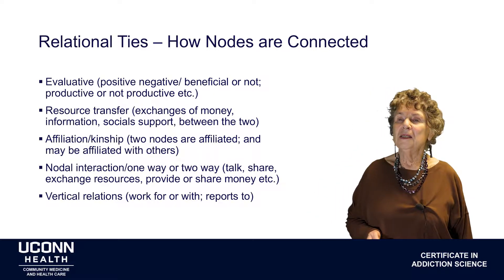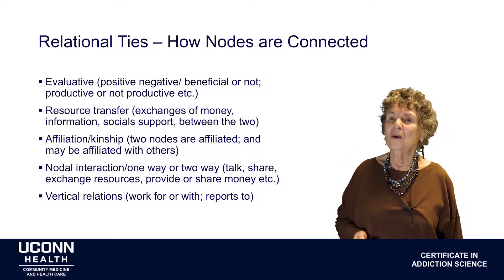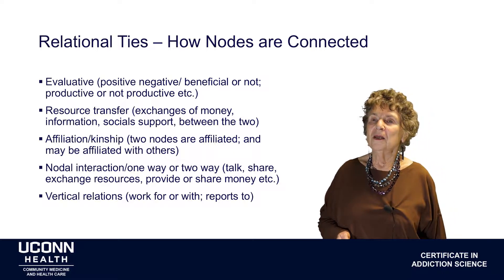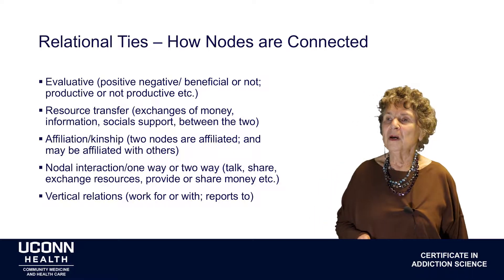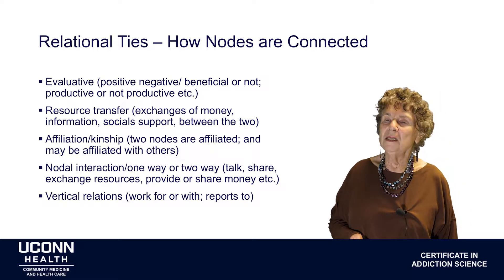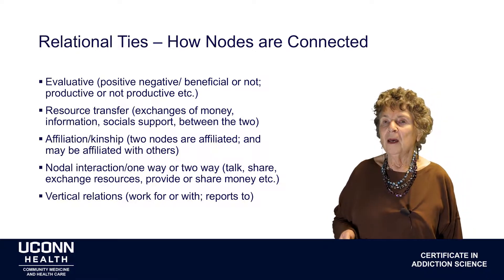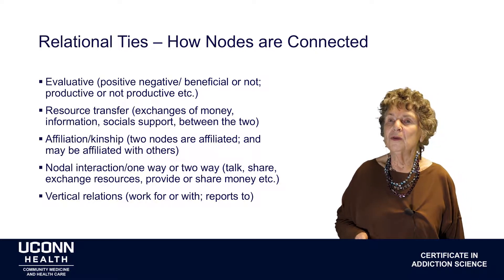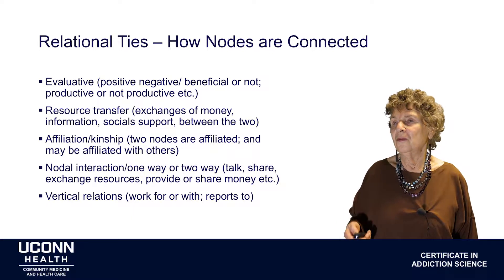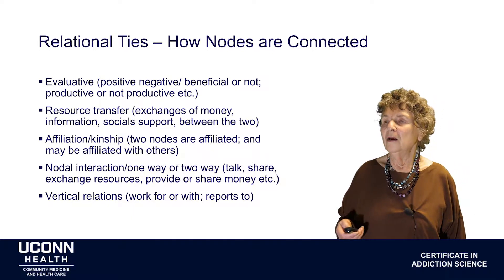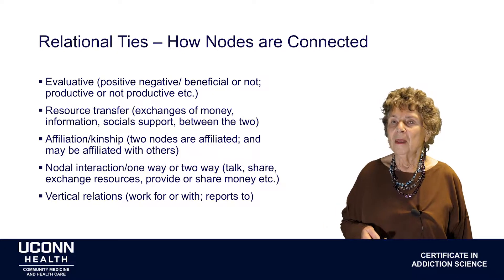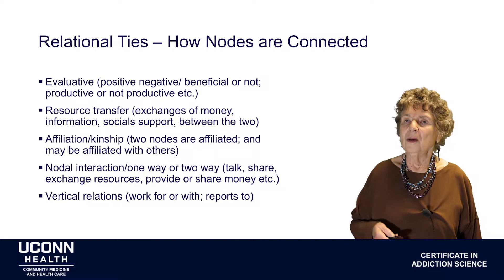About the ties between nodes — how are nodes connected? They can be connected through some kind of evaluative means: the relationship is positive, beneficial, or produces a resource. They can be connected through resource transfer: do people exchange money, exchange information, or support different forms of social support, such as health information, transportation? And that transfer can go one way or both ways.